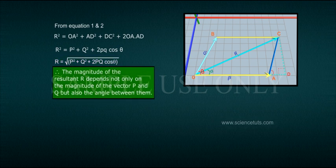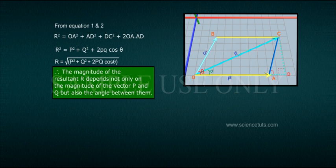Therefore, the magnitude of the resultant R depends not only on the magnitudes of vectors P and Q, but also on the angle theta between them.